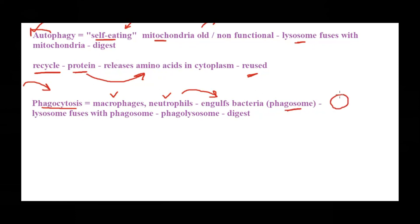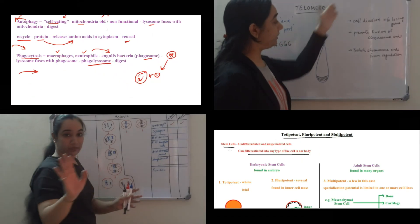When it engulfs the bacteria or antigen, it forms the phagosome. This phagosome would fuse with the lysosome once again and it forms the phagolysosome. As a result of this fusion, the bacteria in the phagolysosome would be degraded by these hydrolytic enzymes. So phagocytosis is an example where the lysosomes degrade something which has come from the external environment which is harmful for the cell. So that's all, these are the functions of lysosomes.